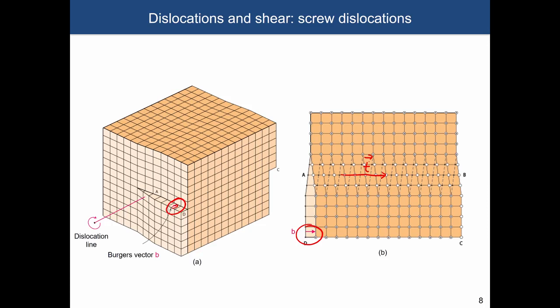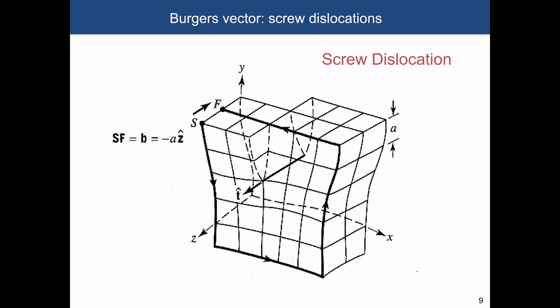In the screw dislocation, the two vectors — Burgers vector and dislocation line — are parallel to each other. To show how to do the Burgers vector calculation for screw dislocations: if this were a perfect crystal and I started from this position making steps down, to the right, up, and then left again, points F and S would coincide. However, in this particular case, F is displaced from point S, and the resulting vector SF is the Burgers vector.